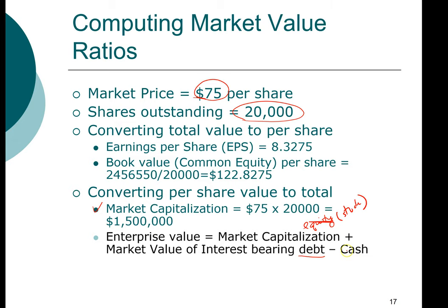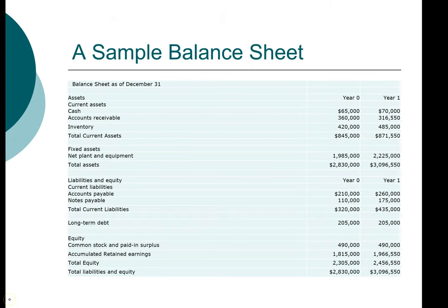Let's take a look at the balance sheet of this company. We want to focus on the market value of debt that is interest-bearing. Looking at liabilities, under current liabilities we have accounts payable, notes payable, and long-term debt. Of these, accounts payable — we typically do not pay interest to our suppliers, so since it's non-interest-bearing, we will not include accounts payable.